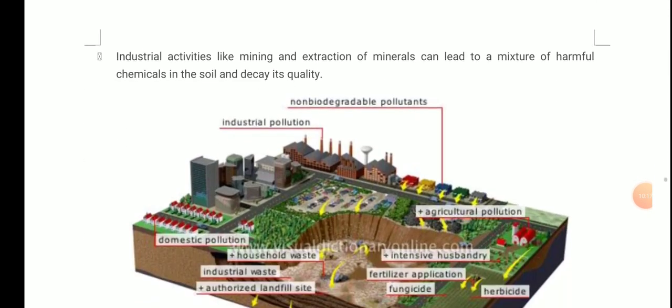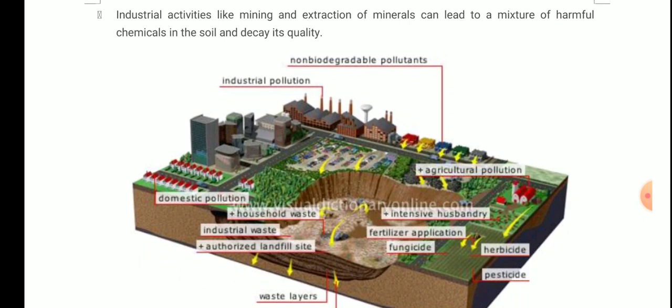Fourth cause: industrial activities like mining and extraction of minerals can lead to a mixture of harmful chemicals in the soil and degrade its quality. Industries release harmful chemicals that are very toxic for the soil — they add harmful substances into the soil, which then affect the biodiversity of the soil.